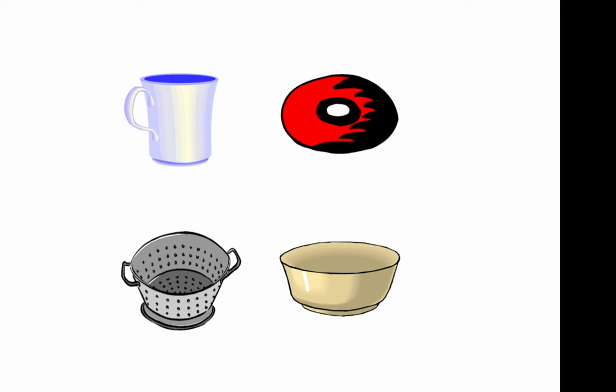whereas the bowl on the right doesn't have any holes. So the two objects on the bottom have similar geometry and different topology.